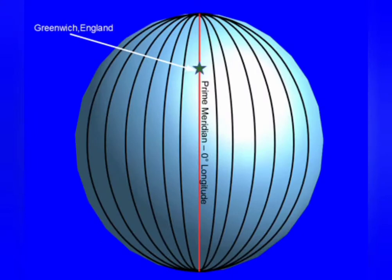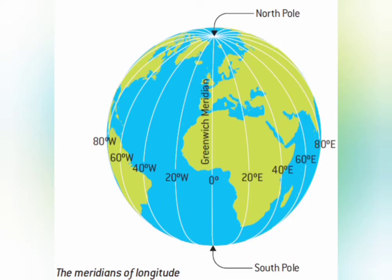The Prime Meridian represents zero degrees of longitude. In the Eastern Hemisphere, longitudes are designated as degrees east — that is, 10° East, 20° East, and so on till 180°. The same applies to the Western Hemisphere. The degrees are further divided into minutes, and minutes into seconds.